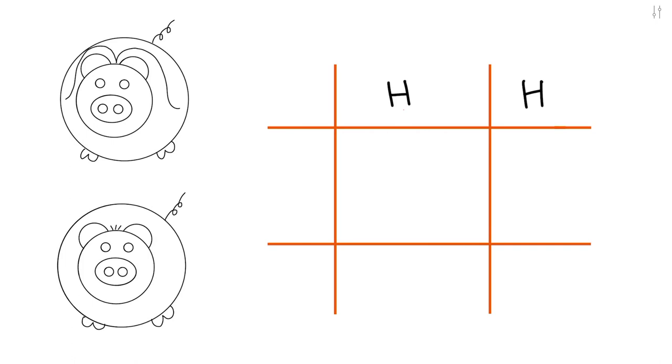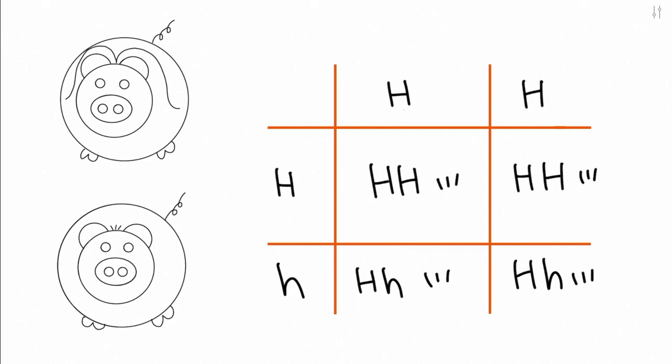Now, in the third generation, since there are so many possibilities of offspring, there are more possibilities of phenotype. In the first combination of the third generation, the parents' genotypes are homozygous dominant and heterozygous. As a result, we have a 50% chance for their genotypes to be either homozygous dominant or heterozygous, with a 100% chance of short hair.